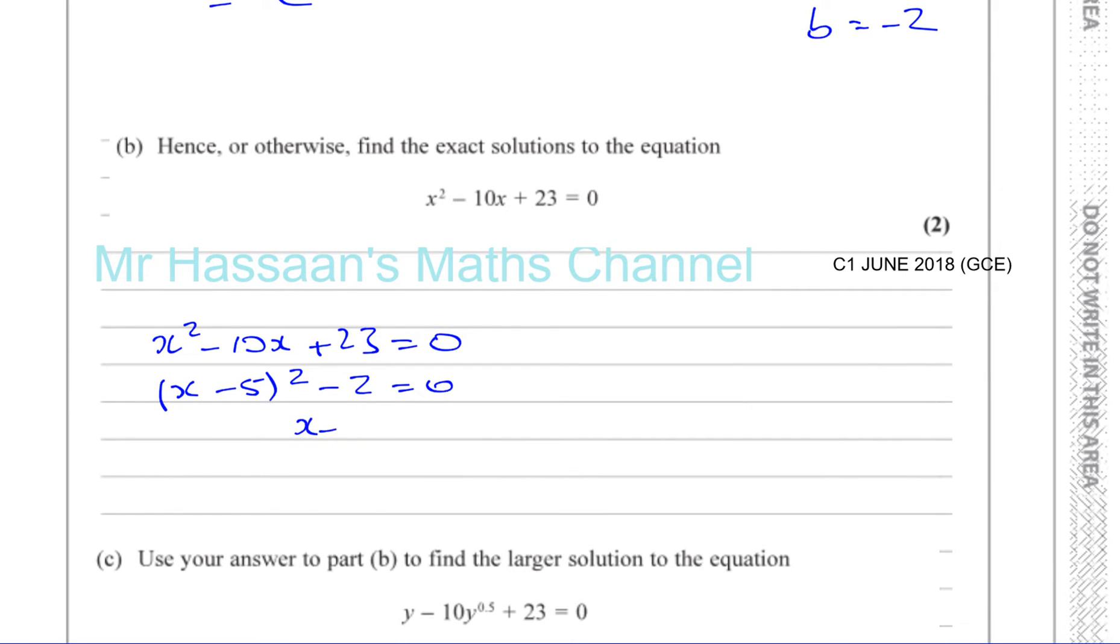We can say (x - 5) squared is equal to 2. So x minus 5 is equal to plus or minus the square root of 2. So x is equal to 5 plus or minus the square root of 2, and that's an exact form like they want. So completing the square helped us to solve it in this way.